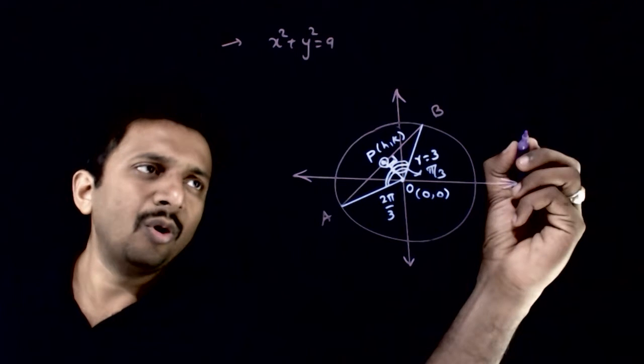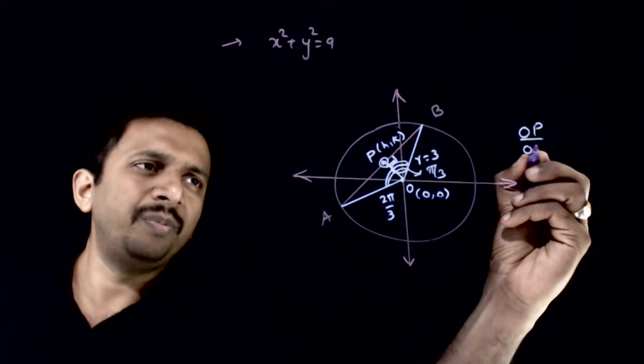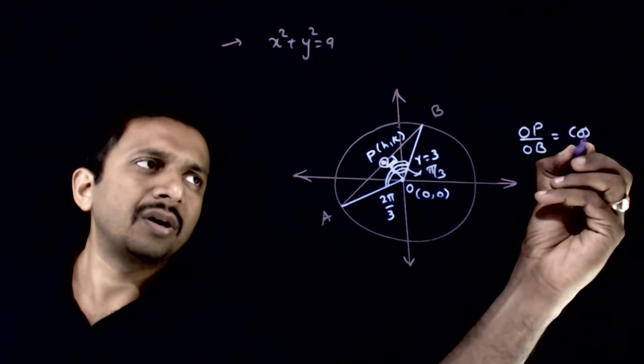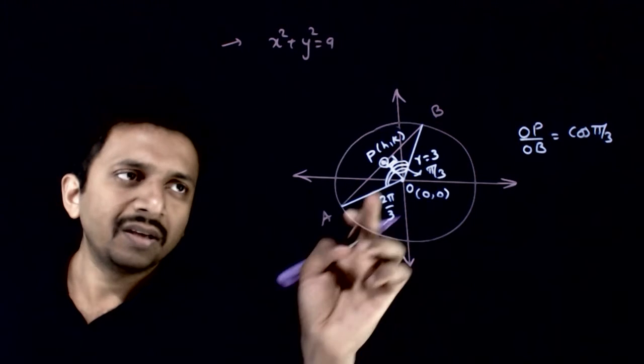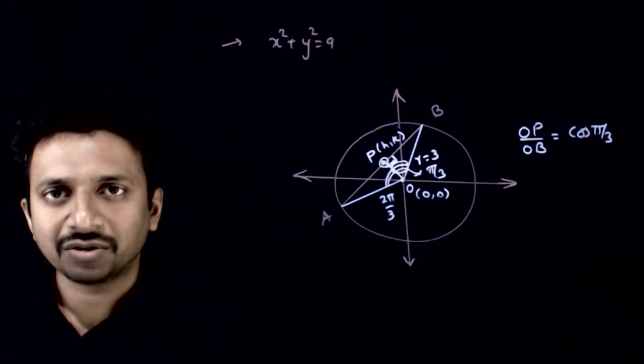can I say that OP by OB is equal to cos π by 3. So cos theta is equal to adjacent side by hypotenuse.